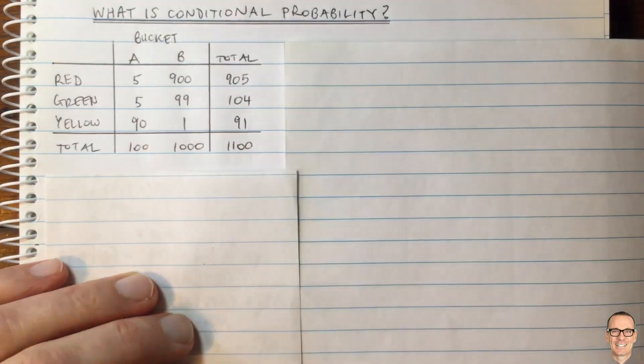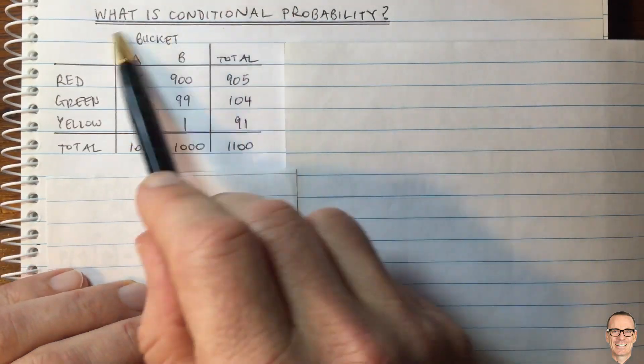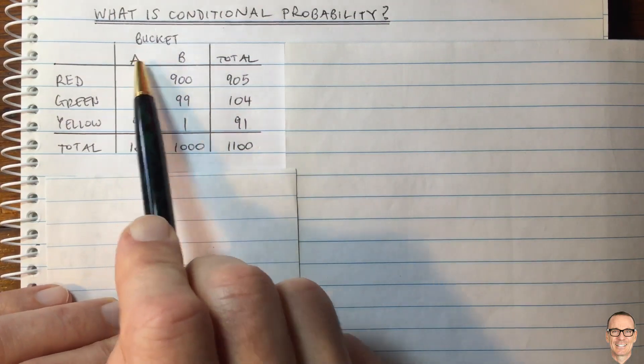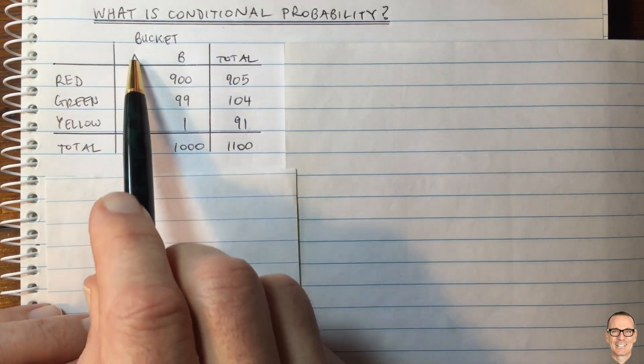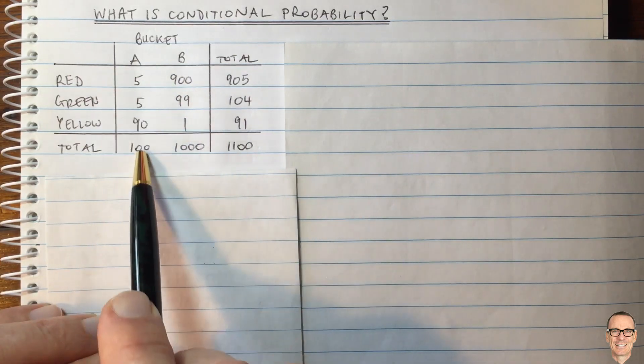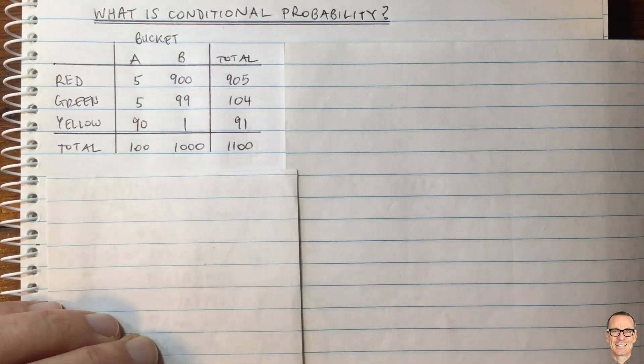What is conditional probability? Here we have a typical example where we have two buckets and they contain colored balls. In bucket A, we can see down the column here each of the different colors, and we know there's a total of 100. Bucket B has 1000.